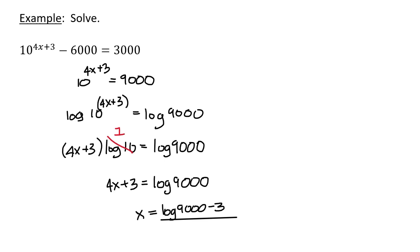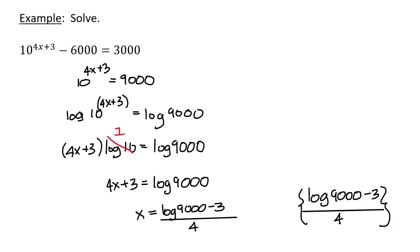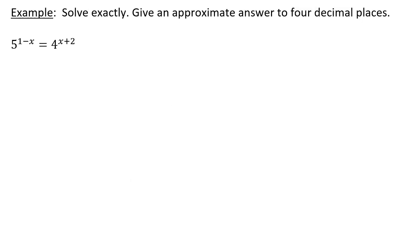So this becomes 4x plus 3 equals log 9,000. Therefore x equals log 9,000 minus 3, all divided by 4.